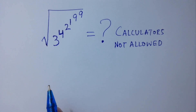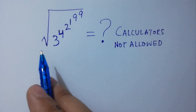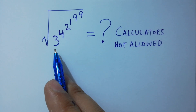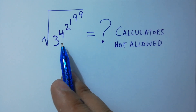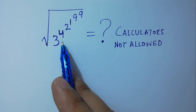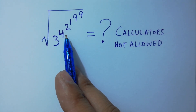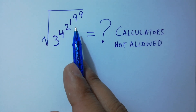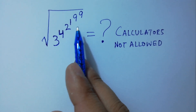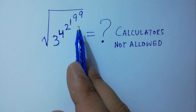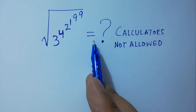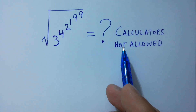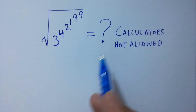Hello friends, can you solve this: the scale root of 3 to the power 4 to the power 2 to the power 1 to the power 9, and again to the power 9 — what is it equal to? Calculators are not allowed.